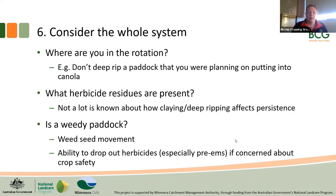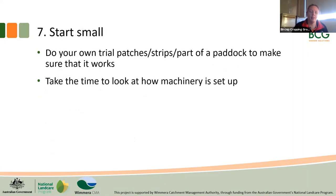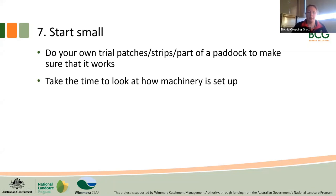I would also really strongly recommend starting small — do your own trial patches or strips or part of a paddock to make sure it works, and use that time to work on how your machinery is set up: how deep are you ripping, how thick are you spreading your clay. You wouldn't want to go out and deep rip or clay spread a whole paddock only to find out you weren't actually improving the problems you were trying to fix. I'd recommend doing a small part the year before you want to do a major area. Also consider whether you need to take a broad spectrum approach and deep rip or clay the whole paddock, or whether you're better off targeting specific areas — the worst parts of paddocks — rather than doing the whole lot.